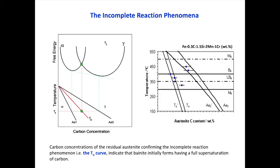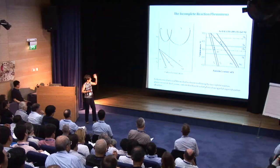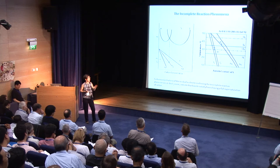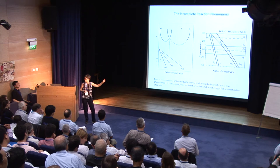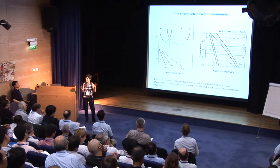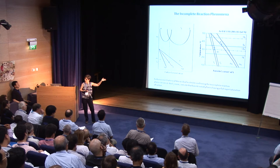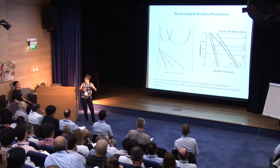On the right you can see an experimental test where we look by X-ray analysis at the incomplete reaction phenomenon and the T0 line. We measured the austenite carbon content when the transformation had half-finished, after austenite decomposition of a medium-carbon, high-silicon steel at different temperatures. It is quite clear that when we decompose austenite in the bainitic region between Bs and Ms, the carbon content when the transformation is complete follows the T0 line. This is an indirect verification of the diffusion-less nature of the transformation.